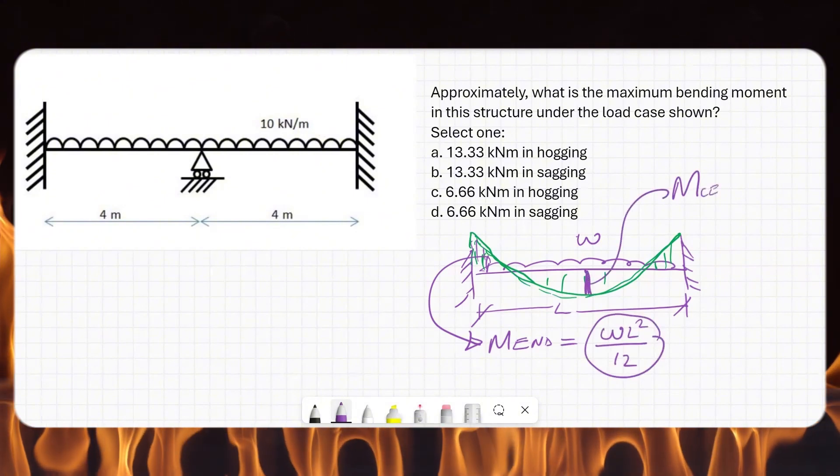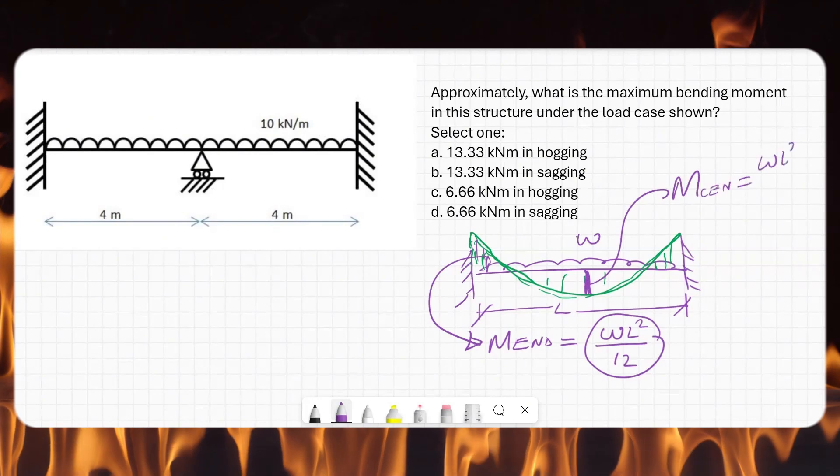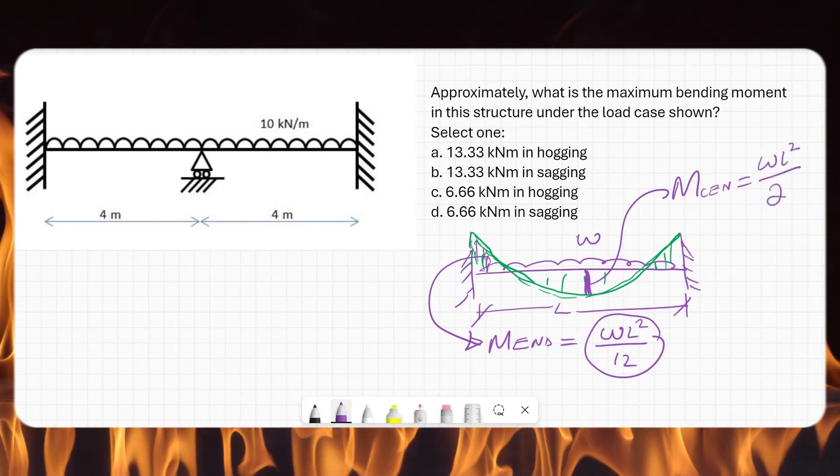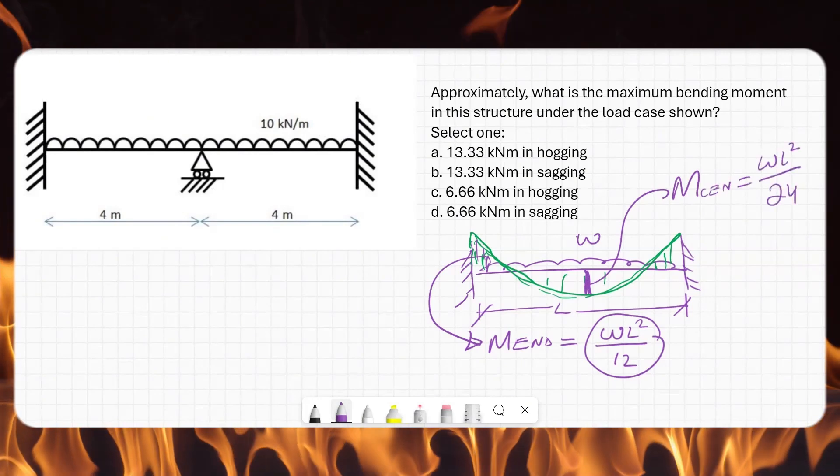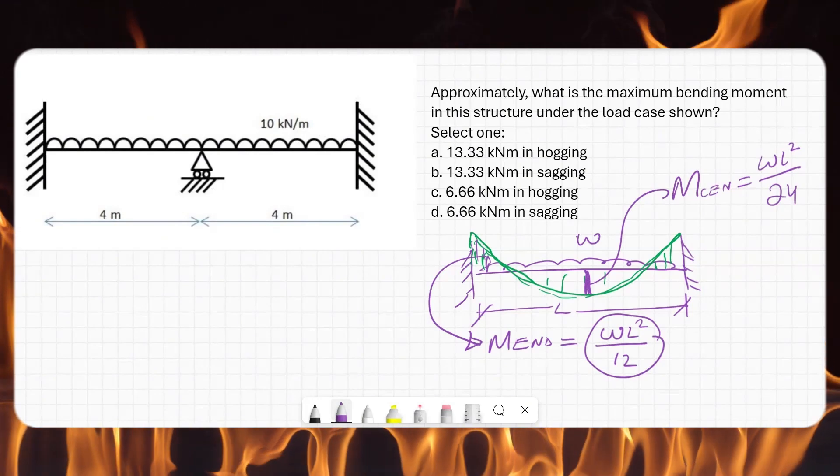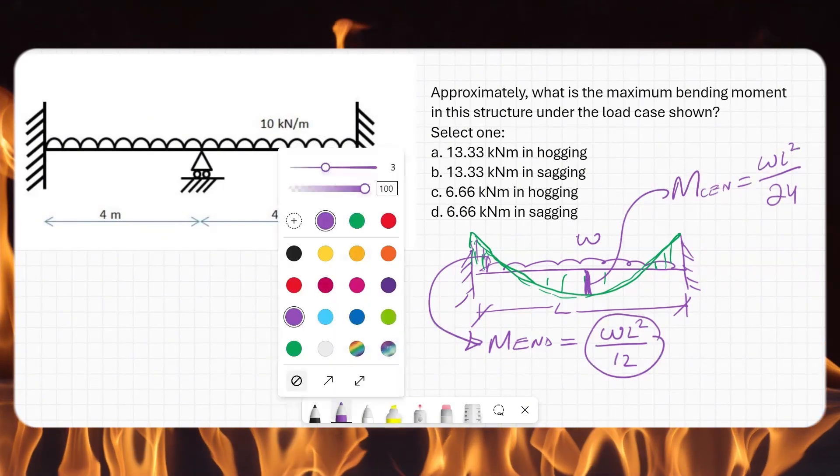The formula is wl²/12, and maximum moment in the middle center moment, the formula is wl²/24. So if we apply this logic, we say that it is going to bend like this.